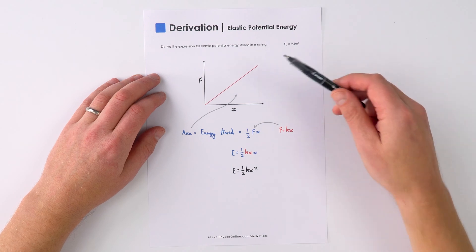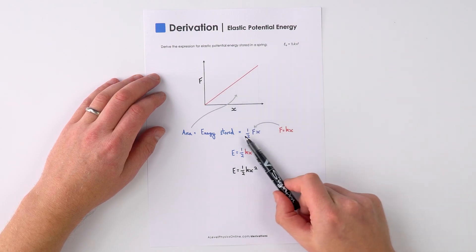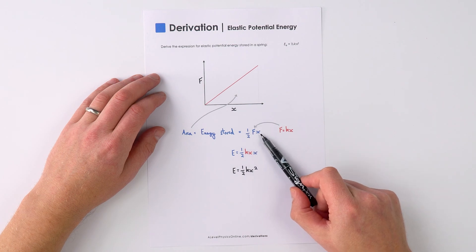Now because that's a triangle, that's just going to be equal to half the base times the height, so the energy stored is equal to a half fx.